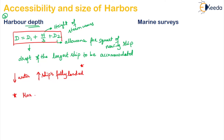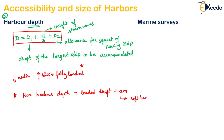If the below-surface in the water is a soft bed, we add 1.2 metres. If it is a hard bed, then we add 1.8 metres. So the allowance depends on whether the bottom is soft or hard. This covers the topic of harbour depth.